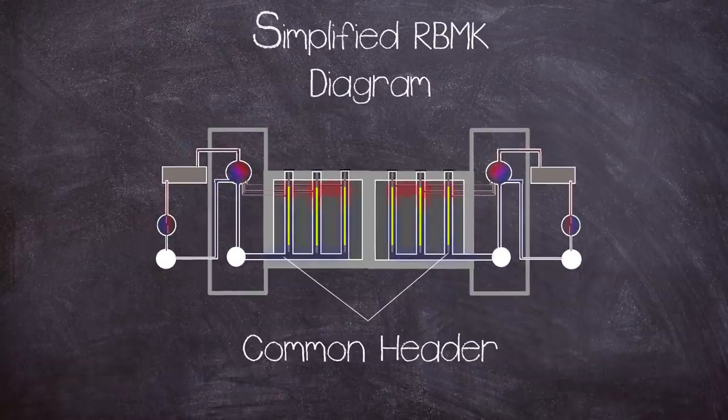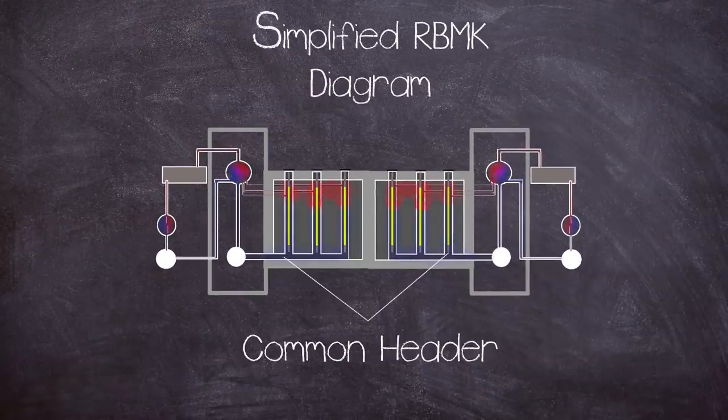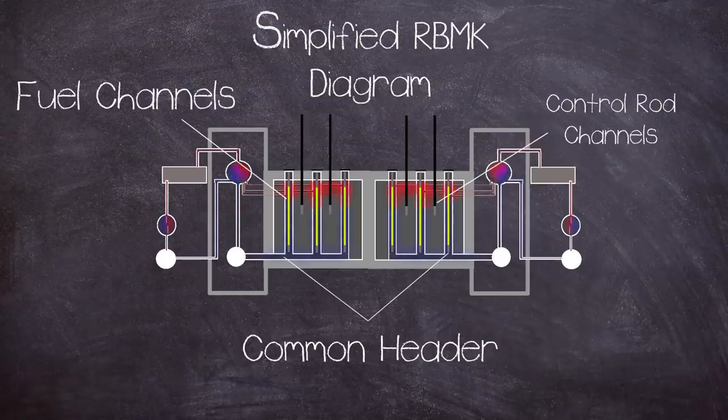The coolant was pumped through the core from the bottom common header through high pressure tube that jacketed the fuel elements where the water would boil. Cooling water also circulated in the control rod channels.